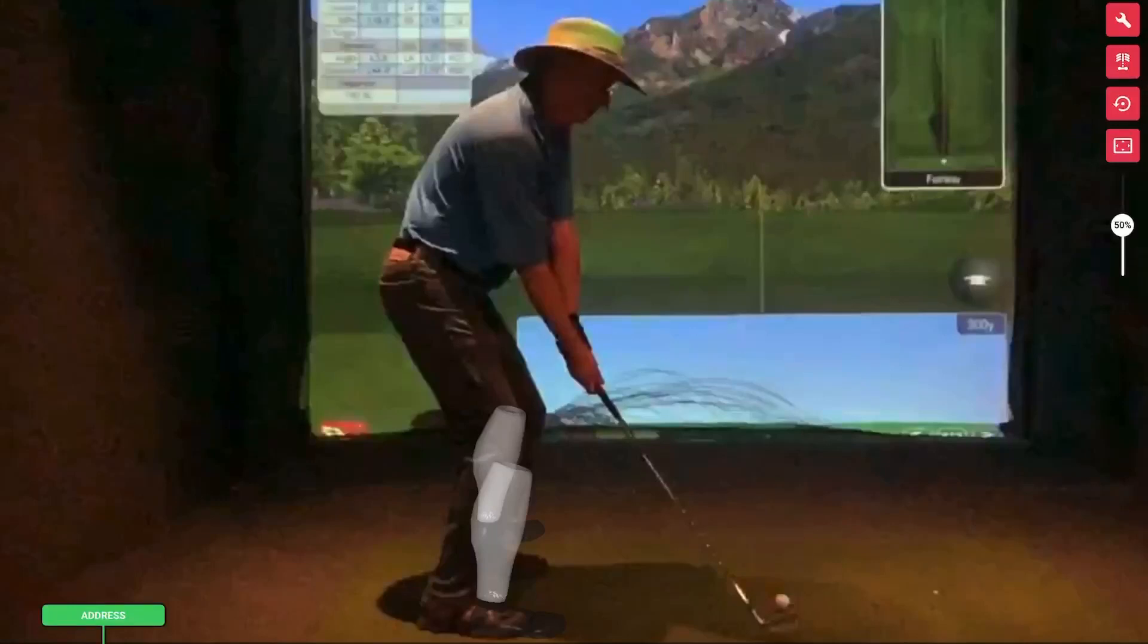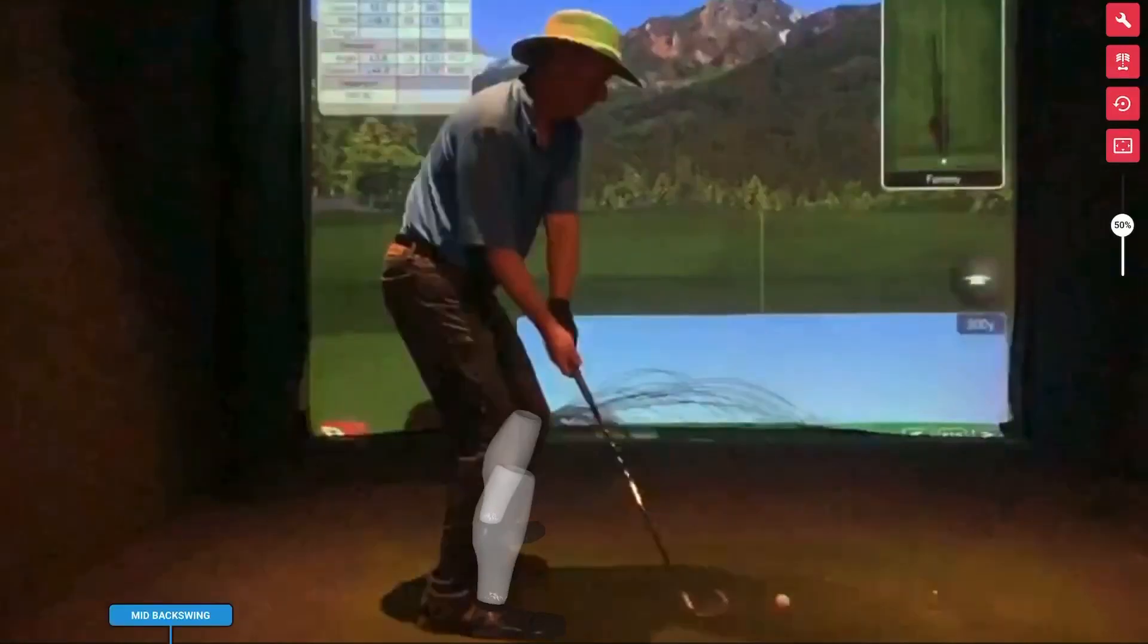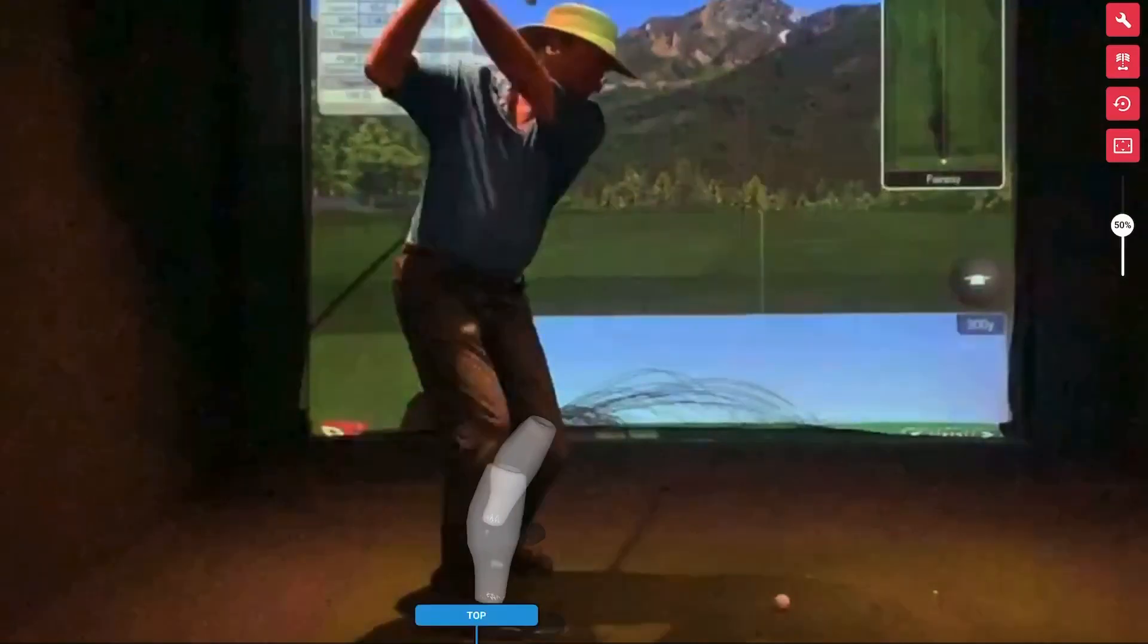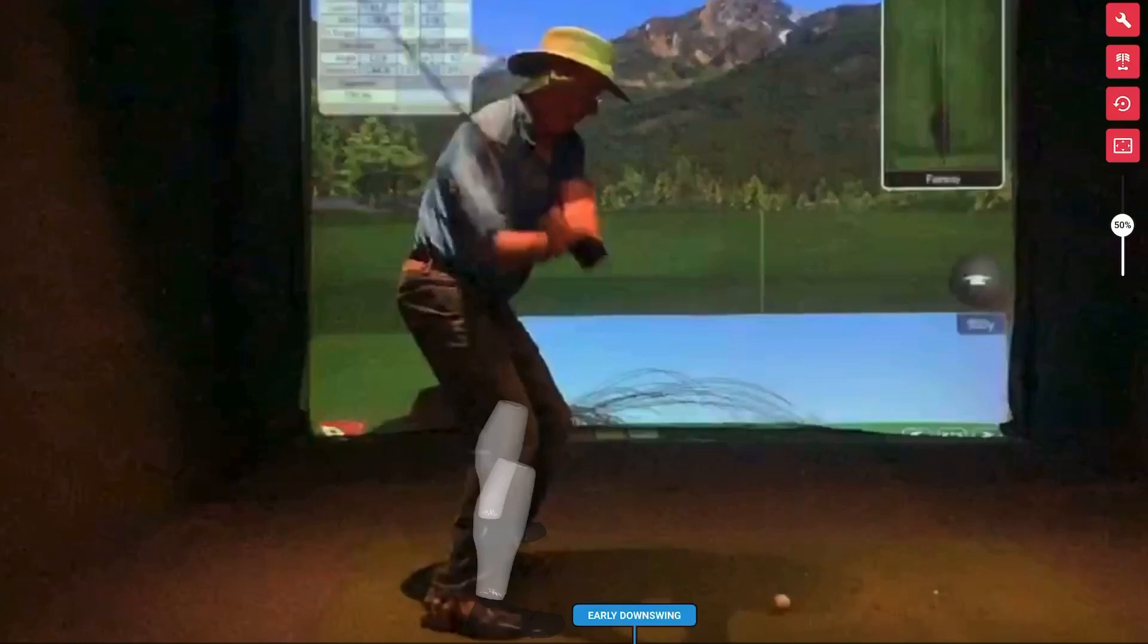The swing starts from the ground up so we can look at its movements of the feet, ankles, knees.